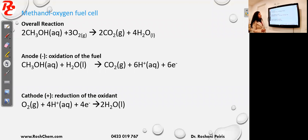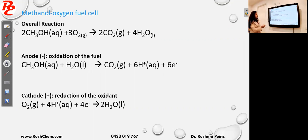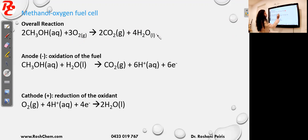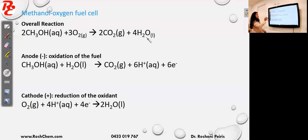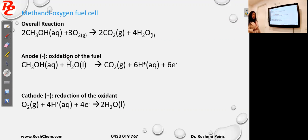Now we look at how to write the equations in a methanol-oxygen fuel cell. We know that in any fuel cell the overall reaction is a combustion. In this case, methanol is undergoing combustion: CH₃OH reacting with oxygen to make carbon dioxide and water. Then you can balance the equation. Now look at the overall reaction to get the anode and cathode equations. The anode is the oxidation where the fuel, methanol, undergoes oxidation.